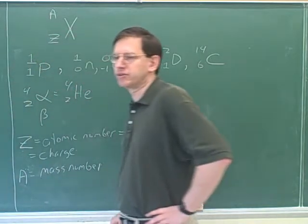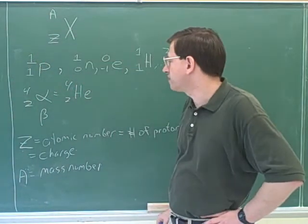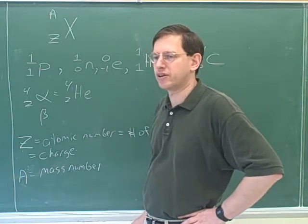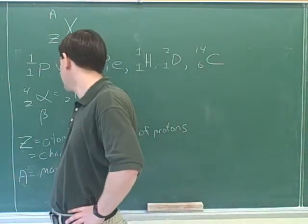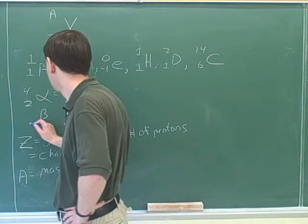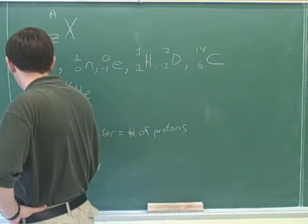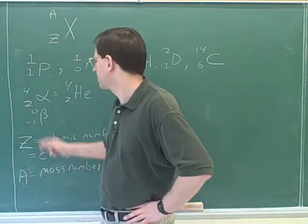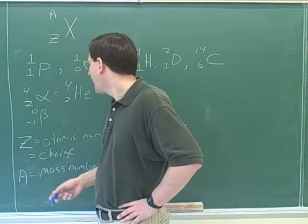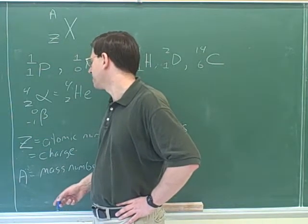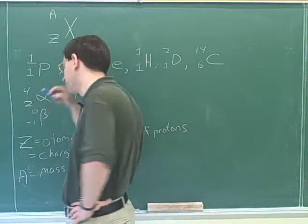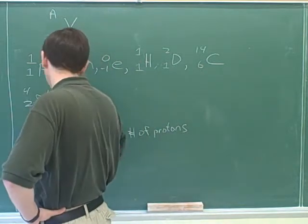Then there are beta particles. Beta particles are electrons. The Z number for a beta particle is negative one, because an electron has a charge of negative one. The mass number is approximately zero — not really zero, but it's so small that we treat it like zero.